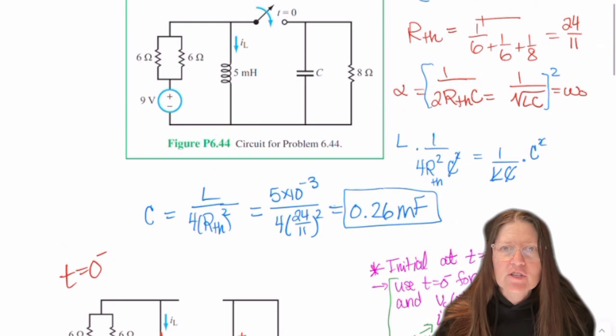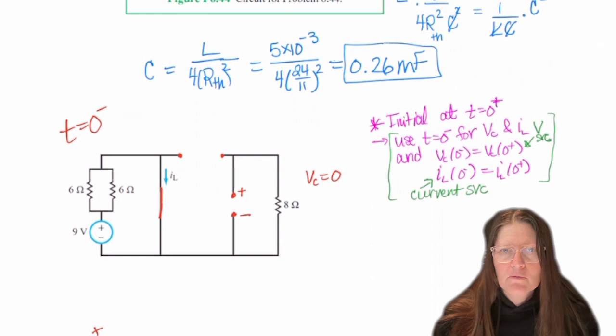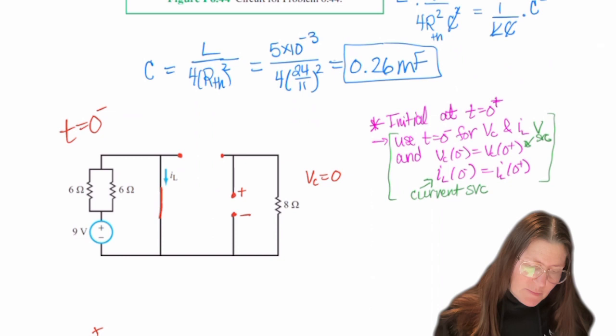The switch is open first. So this will be an open. And so from this, there's no source on the right side. So VC will be zero. And then IL is going to be the current being pulled into this direction.